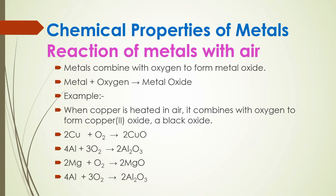Now we will study the chemical properties. The first chemical property is the reaction of metal with air. When metal reacts with oxygen, it forms a metal oxide: metal + oxygen → metal oxide. For example, copper reacts with oxygen to form copper(II) oxide, which is black in color. Similarly, aluminum forms Al₂O₃, magnesium forms MgO. So copper, aluminum, and magnesium all react with oxygen to form their respective oxides.